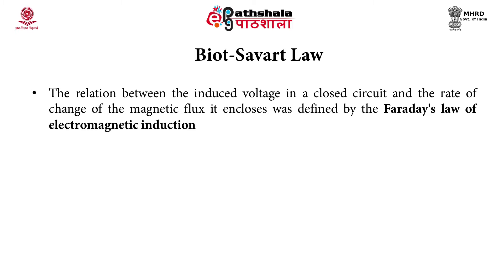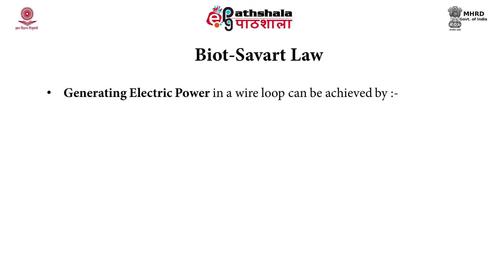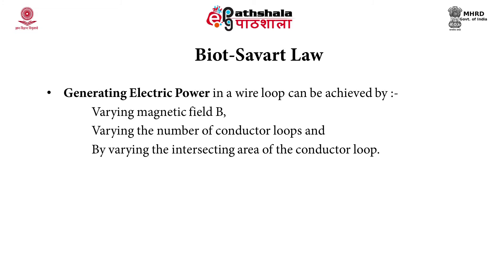The relation between the induced voltage in a closed circuit and the rate of change of the magnetic flux it encloses was defined by Faraday's law. Here E is the induced voltage and the negative sign is due to the direction of the induced electromotive force. Generating electric power in a wire loop can be achieved by varying the magnetic field, varying the number of conductor loops, or by varying the intersecting area of the conductor loop.